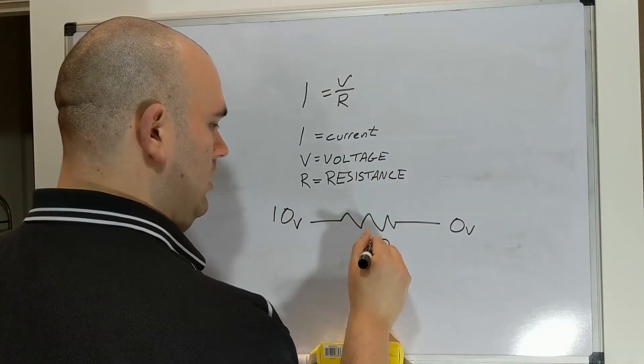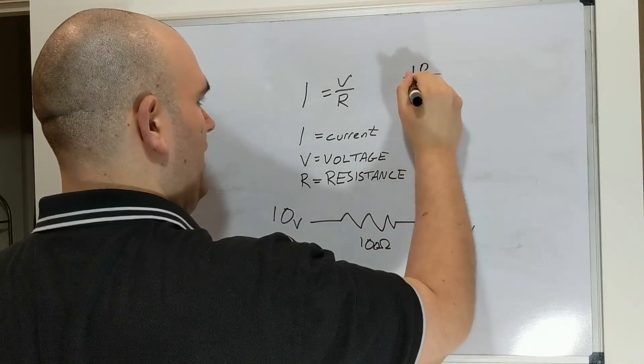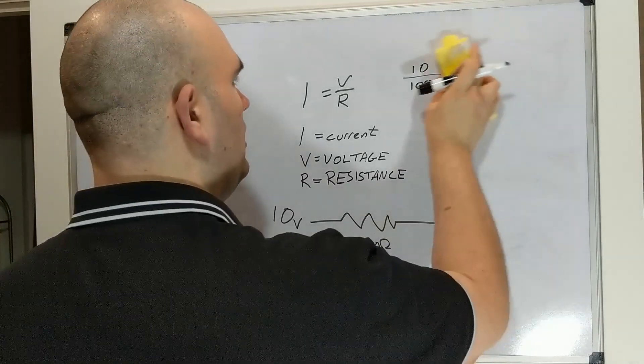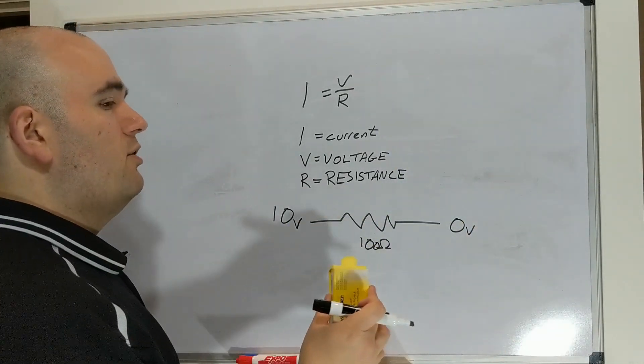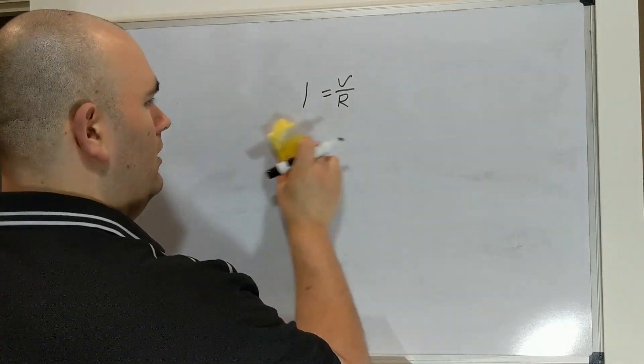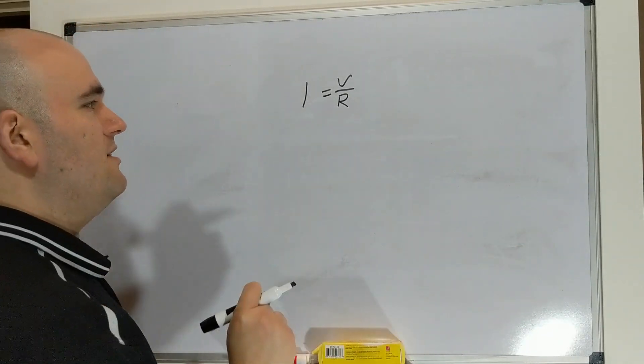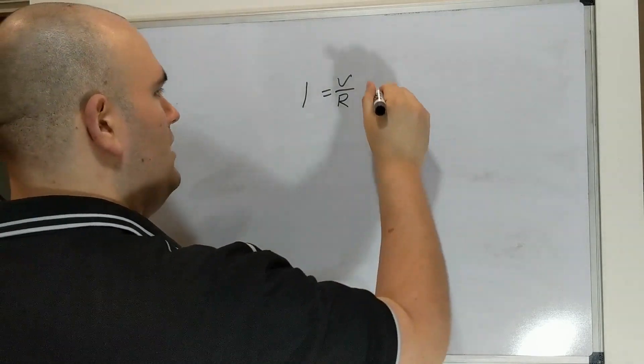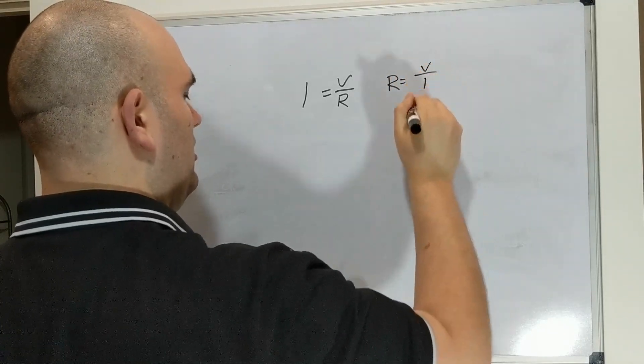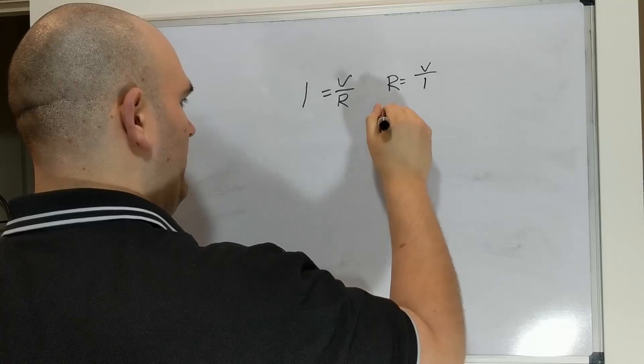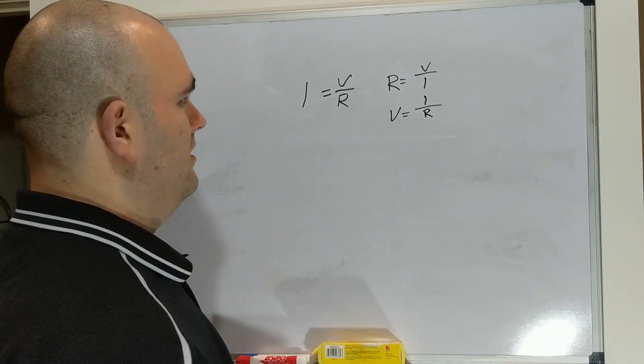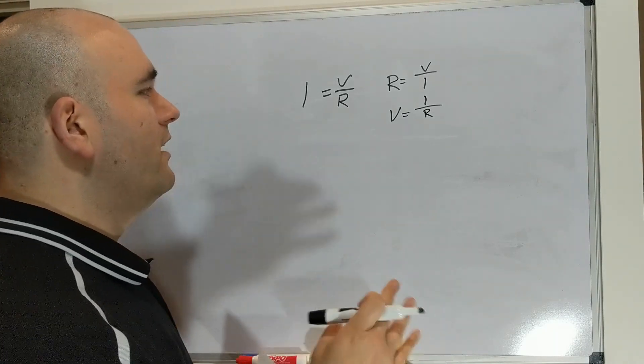Now if this were 100 ohms, then it would be 10 divided by 100, which would give us 0.1 amps or 100 milliamps. So we can use this equation to understand what current is going to flow through our circuit. But we can actually rewrite the equation. We can find a resistance value by putting in our voltage and our desired current, or we can find the voltage that we need by putting in the current that we want. This is all very helpful.